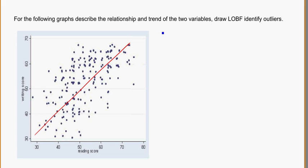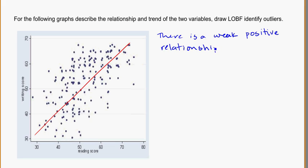So if I'm going to describe this, I would say there is a weak — because the data points are spread out far from the line — positive, because it's increasing, relationship between reading and writing scores.